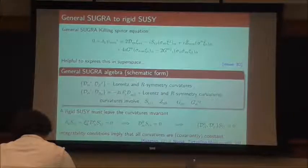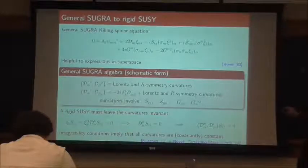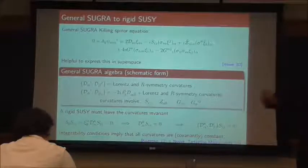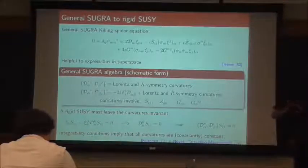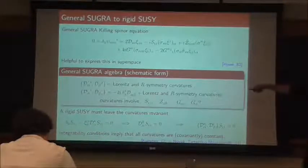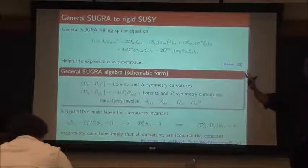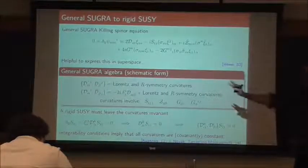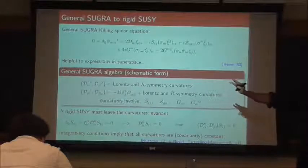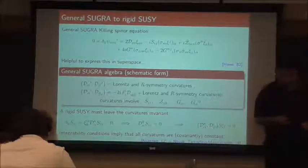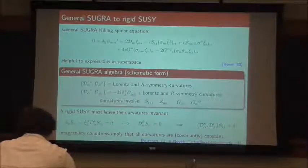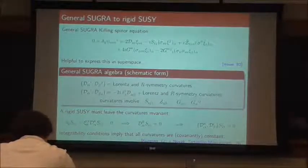This is actually where some of the magic happens. A rigid SUSY must leave the curvatures invariant — this is analogous to: if I'm talking about a bosonic isometry, a Killing vector that leaves the metric invariant also leaves the Riemann tensor invariant. I repeat that story in superspace. I've got some super-isometry, which is my Killing spinor, and it leaves the super-metric invariant, so it has to leave all of the curvature objects invariant.